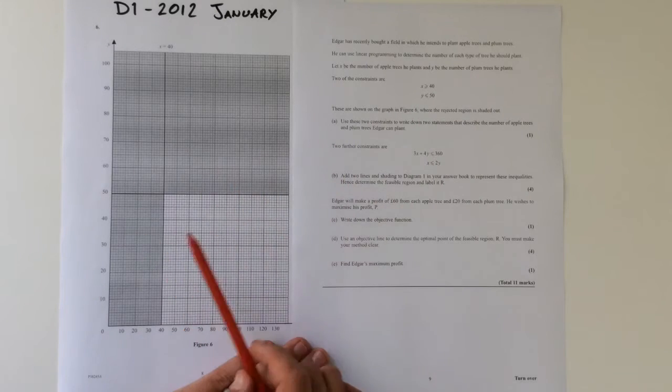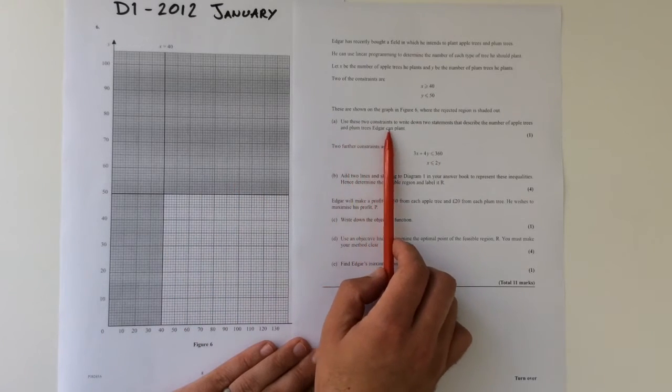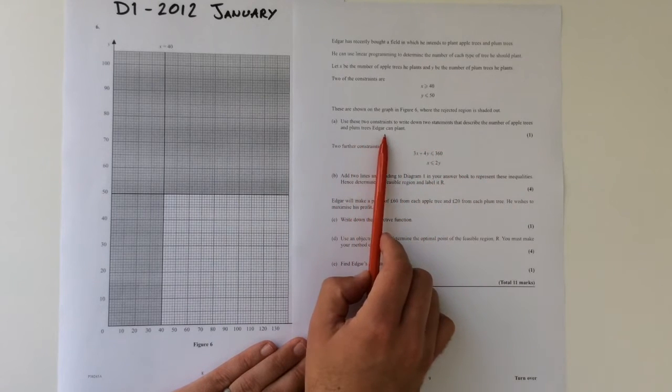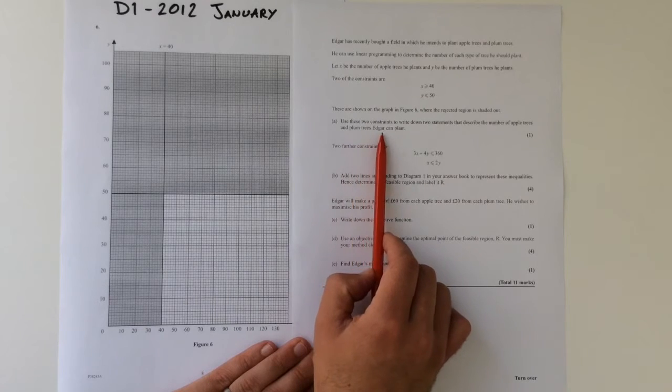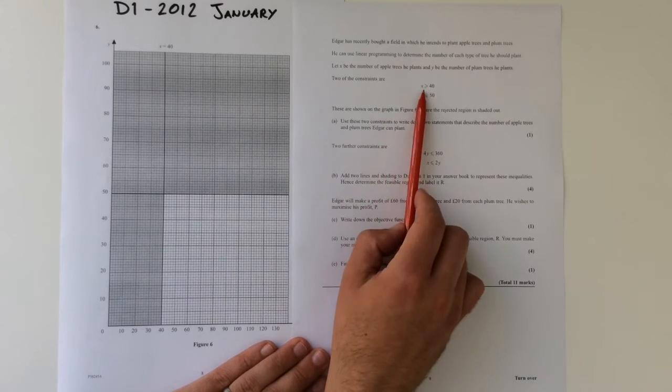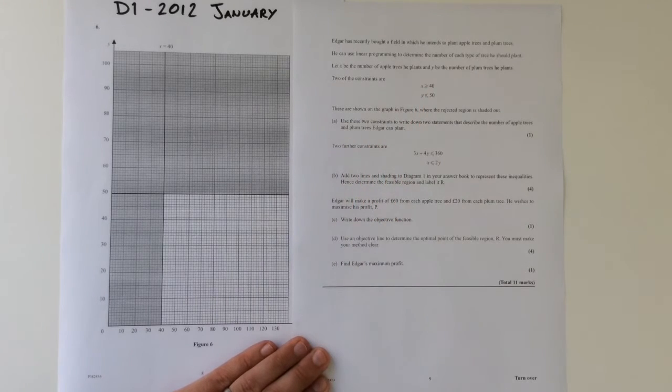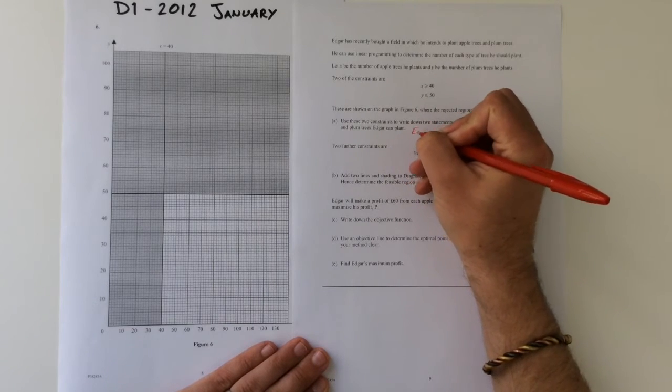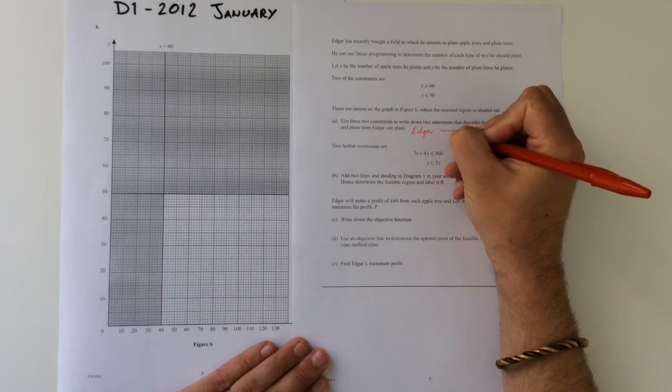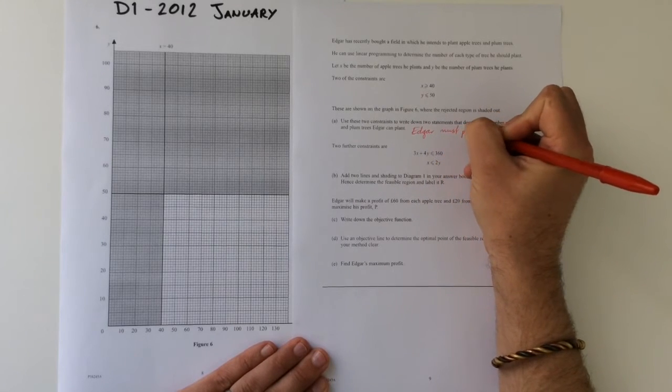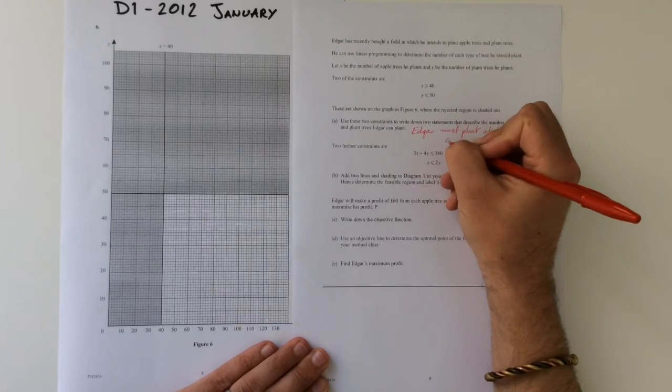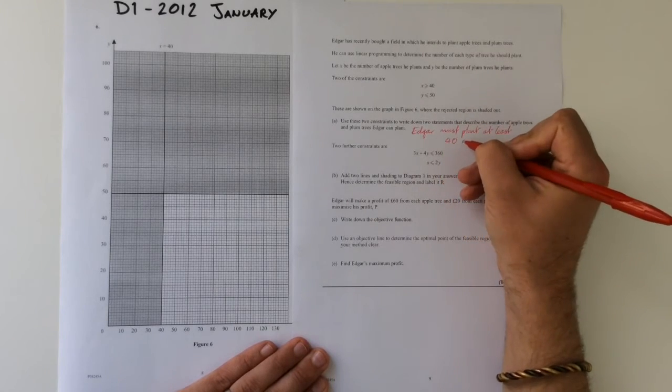The rejected regions are being shaded. So we've got to use these two constraints to write down two statements that describe the number of plum trees that Edgar can plant. Well, we've got x is greater than or equal to 40. So I would write something like, Edgar must plant at least 40 apple trees.